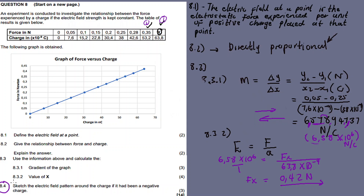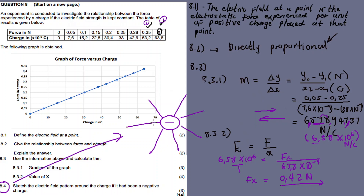8.4: Sketch the electric field pattern around the charge if it had been a negative charge. For a negative charge, the electric field lines move towards the charge. For a positive charge, they move away. This is a three-mark question.